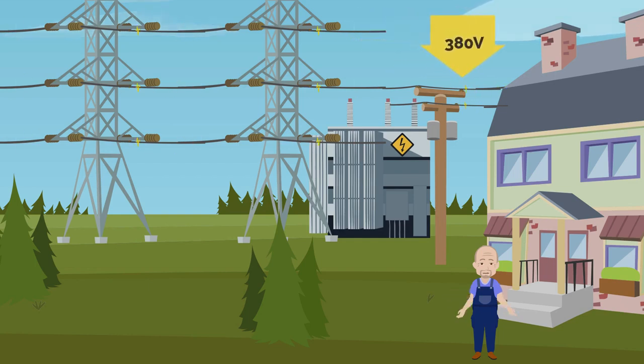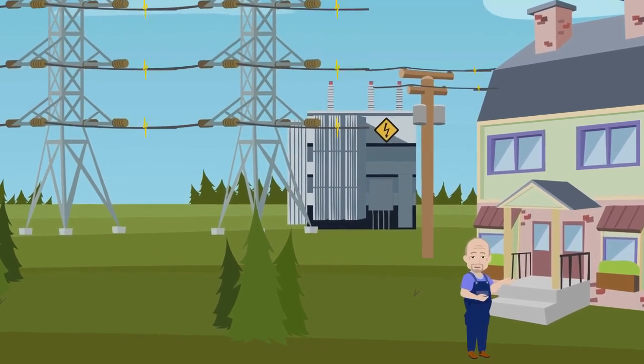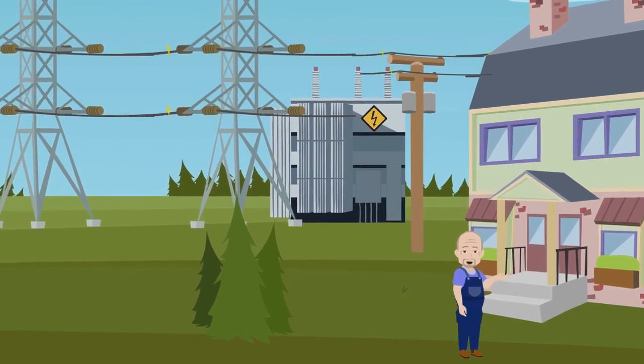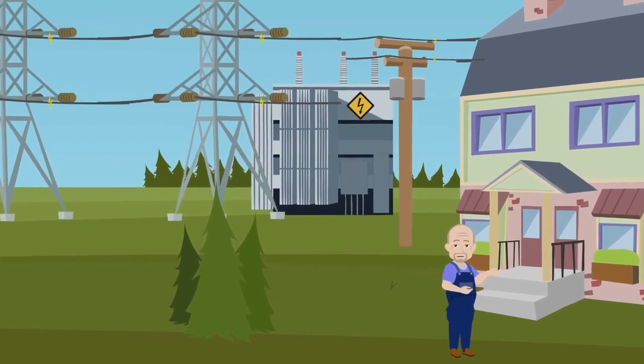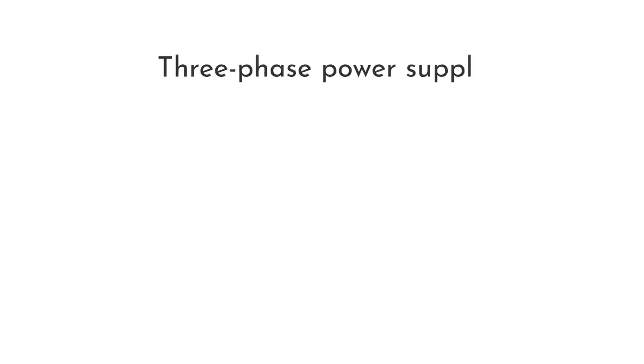After that, the substations reduce the voltage to 380 volts by means of step-down transformers. Later on, electric current is supplied to our homes via three-phase or single-phase low-voltage circuits.